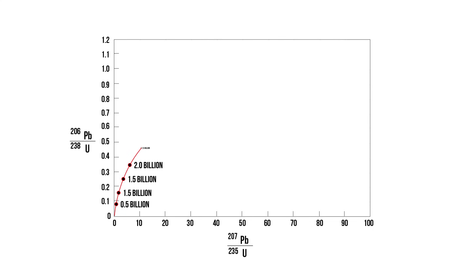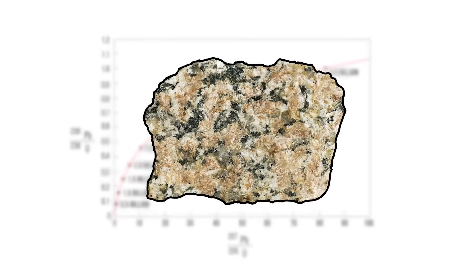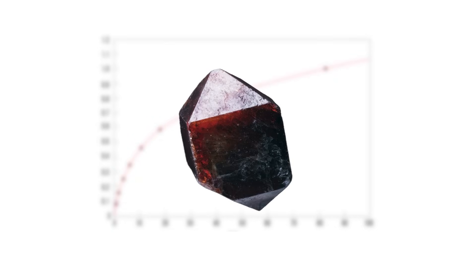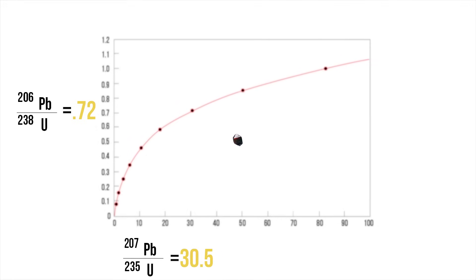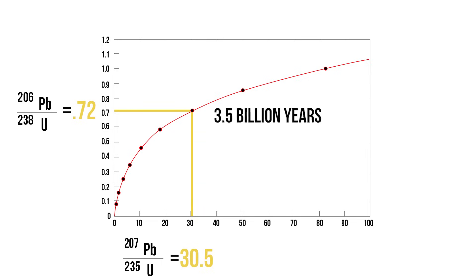Take a close look at this diagram. You can see that the older the rock, the farther up the curve the sample plots. In the ideal case, when a geologist collects a rock, separates out the zircon, and measures the ratios of lead-206 over uranium-238 and lead-207 over uranium-235, and plots these on this diagram, it will plot on this curve, and the exact age can be determined.